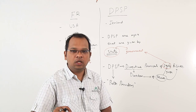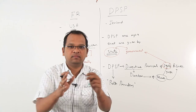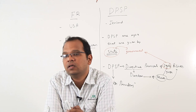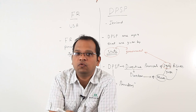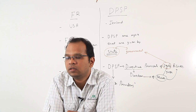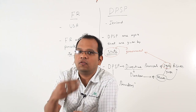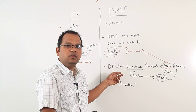What does path provider actually mean? It happens sometimes that state government and central government are doing their work but are uncertain about what to do next in terms of welfare and development. If they have a lack of clarity in their vision, they refer to the Indian constitution and the DPSP. Therefore, DPSP is called the path provider.